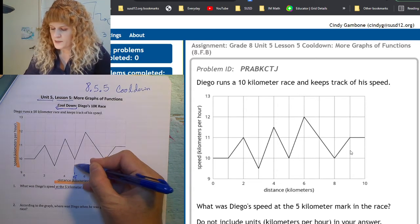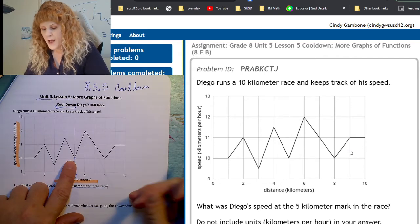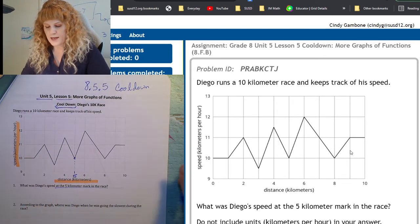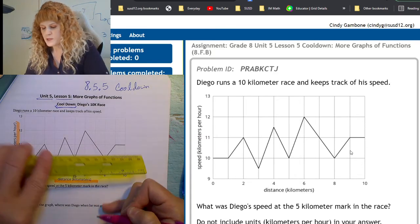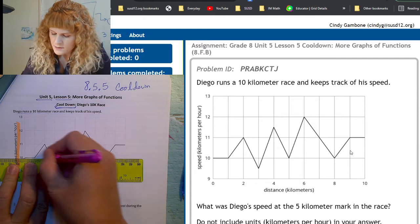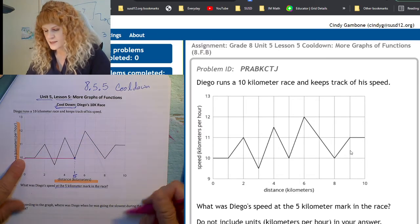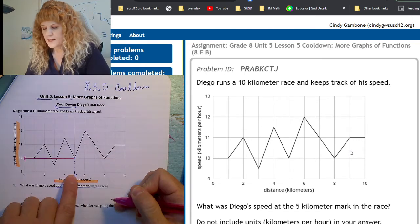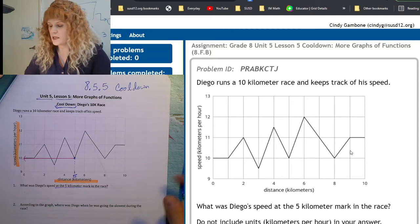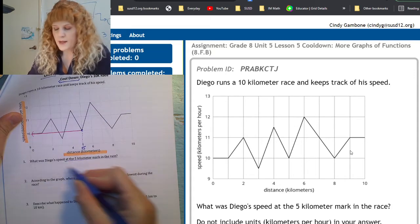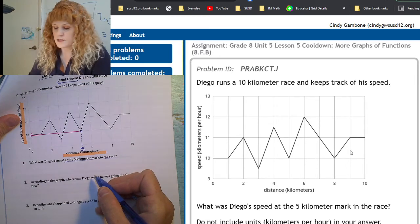So at five kilometers, go up to the graph and read that point. At that point, if you look over at the y-axis, his speed was 10. I'm going to draw a line so you can see how I got that. Just draw a line there. Look over at the y-axis. When x equals five kilometers, Diego's speed is 10 kilometers per hour. I'm going to write my answer on the paper. I think you should too, and then we'll enter it into the computer together.